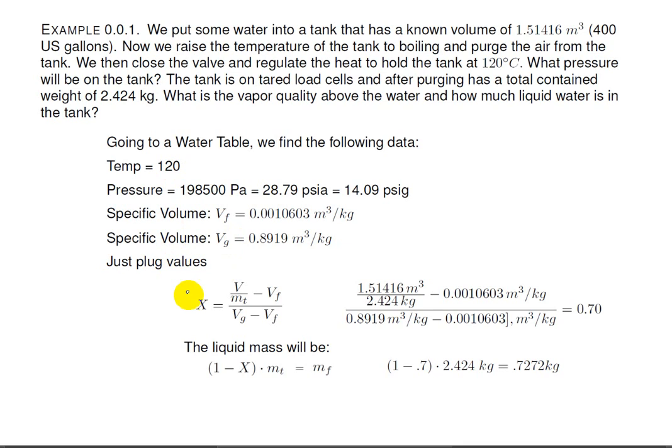Now we just plug our values into our vapor fraction equation. So we had a tank volume of 1.5 cubic meters. We had a total weight of 2.42 kilograms. This is our VF. This is our VG. This is our VF again, all according to this equation. And that gives us a vapor fraction or steam quality of 0.7.